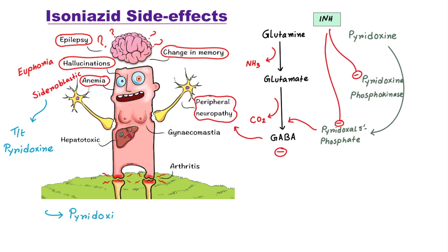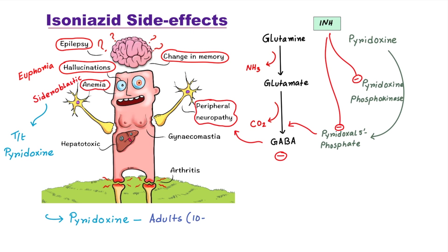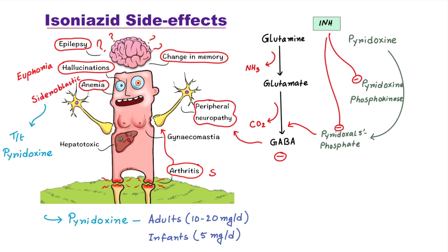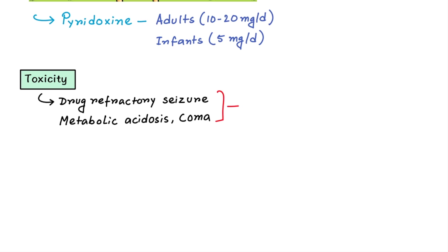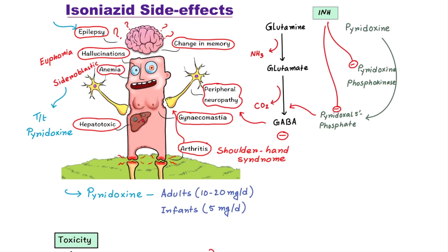The dose for pyridoxine is 10–20 mg per day for adults and 5 mg per day for infants. Arthritis involving the upper limb, known as shoulder-hand syndrome, can also be seen. A patient with isoniazid toxicity can present with drug-refractory seizures, metabolic acidosis, and coma. In that case, intravenous pyridoxine is the drug of choice. Anti-epileptics like benzodiazepines and barbiturates are effective for seizures, but conventional drugs like phenytoin are not effective.